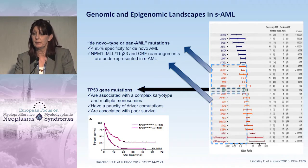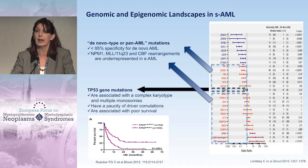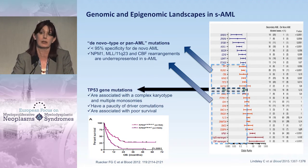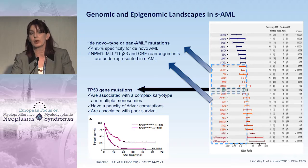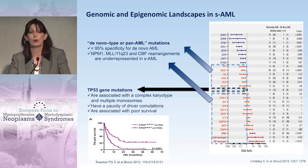They identified a second group — the worst group as we have seen in MPN, MDS, and secondary AML — patients with TP53 gene mutations, usually associated with very bad survival, and also with complex cytogenetics and monosomal karyotypes. Then we have the rest: FLT3 mutations, NPM1 mutations, MLL rearrangements, CBF rearrangements — the classical de novo AML mutations — are rarely seen in secondary AML, with an incidence for NPM1 mutations of less than 5%. All remaining mutations are seen in both de novo and secondary AML, and were called the pan-AML mutations.